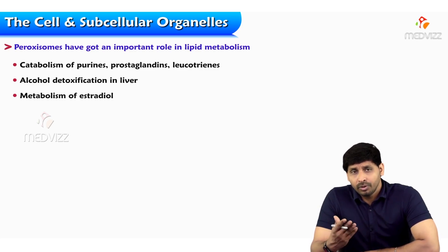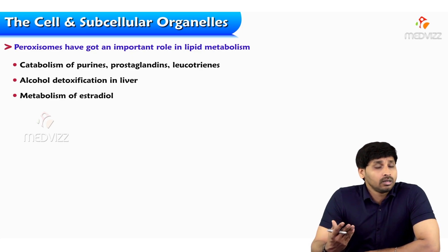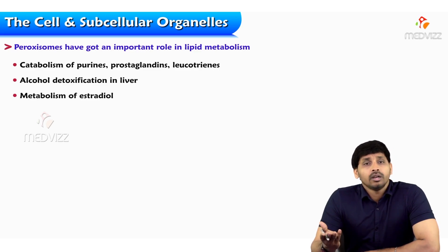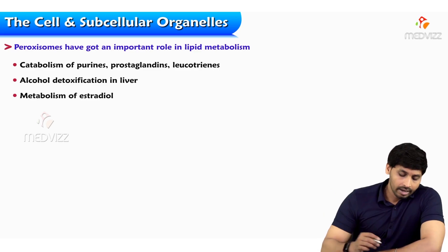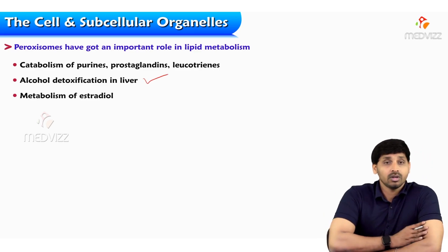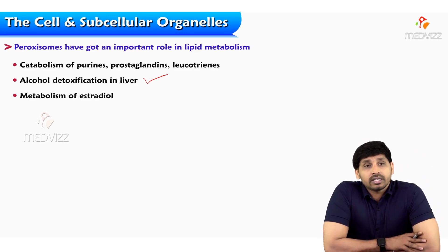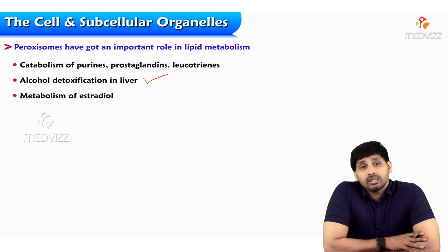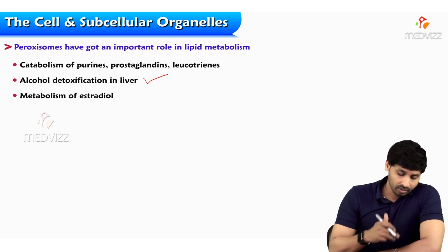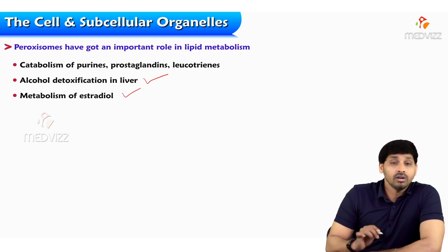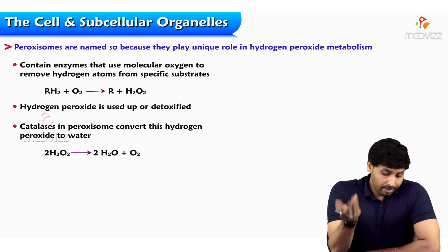Other functions of peroxisomes include catabolism of purines, prostaglandins, and leukotrienes. Prostaglandins and leukotrienes are lipid in nature. Purines are the bases involved in making nucleotides, and nucleotides are required for making DNA and RNA. Peroxisomes also perform alcohol detoxification in the liver — the liver is a site for detoxification and this function is mainly attributed to peroxisomes — as well as metabolism of estradiol.